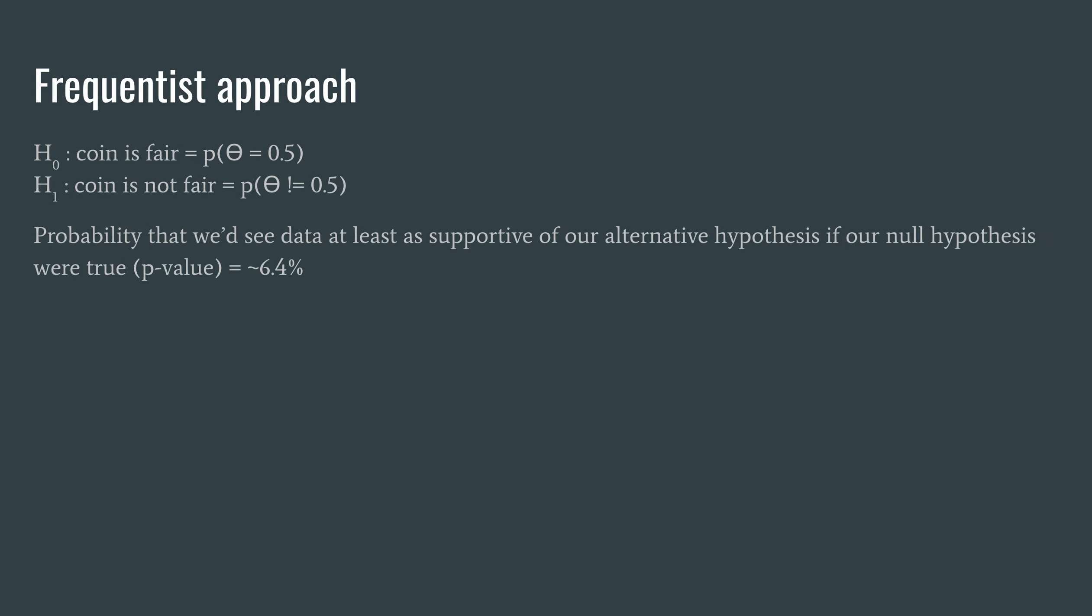Continuing with the frequentist analysis we can state our null hypothesis is that the coin is fair, probability of theta is 0.5. And our alternative hypothesis is that the coin is not fair, the probability of theta is not 0.5. We can then calculate a p-value which is interpreted as the probability that we'd see data at least as supportive of our alternative hypothesis if our null hypothesis were true. In this case that's 6.4%.